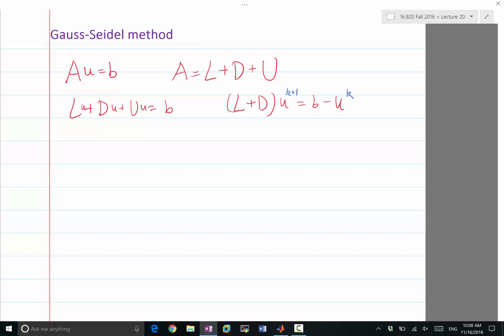But this is more complex. This is L+D, and L+D is not a diagonal matrix. It is a lower diagonal matrix. And how do we invert a lower diagonal matrix?